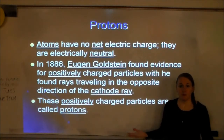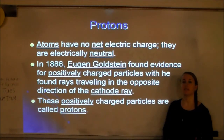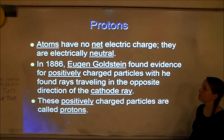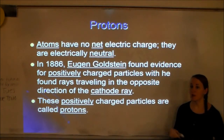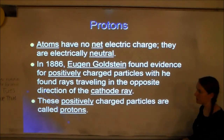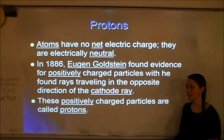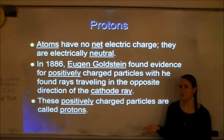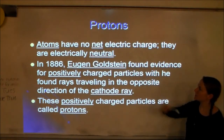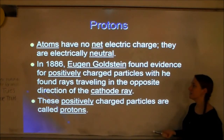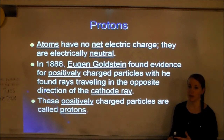Now let's talk about protons. J.J. Thompson discovered electrons using the cathode ray tube. But they knew atoms were neutral — otherwise we would all be attracting to everything. So if you have negative particles, you also have to have positives to balance them out. Eugene Goldstein found evidence for positively charged particles when he found rays traveling in the opposite direction of the cathode ray.